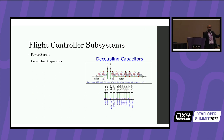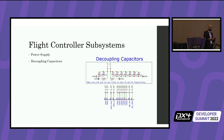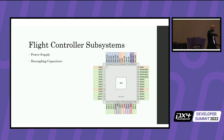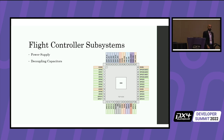Decoupling capacitors are very necessary for any IC you use on the board. What's shown here is specifically for the microcontroller, but almost every IC will need them. Their purpose is to filter out voltage fluctuations — they act as a low-pass filter to flatten out the voltage. Specifically for the microcontroller, every VDD pin spread around the periphery generally takes one or two decoupling capacitors placed as close as possible to the microcontroller.